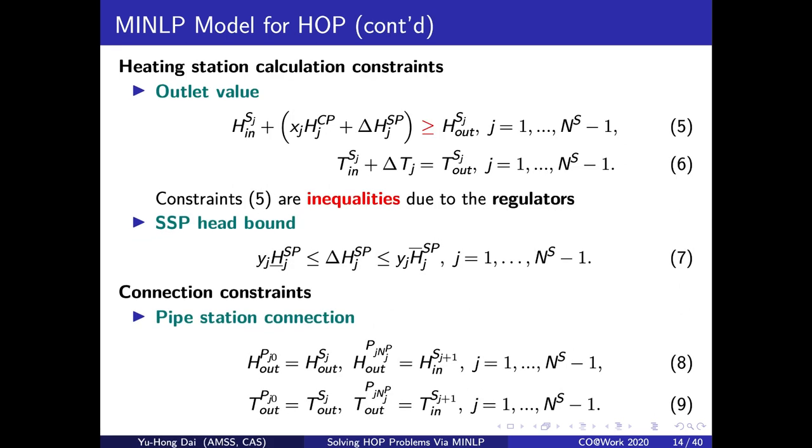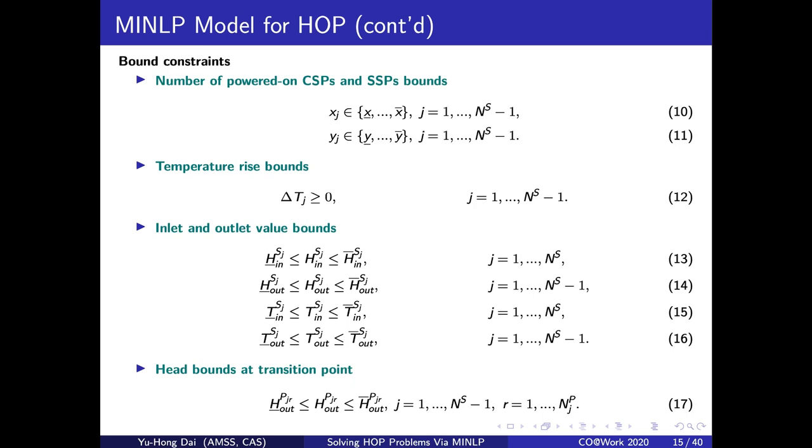Constraints 5 to 7 are for the calculation of heating station. The outlet head and temperature are decided by inlet values plus the head and temperature rise provided by pumps and heating furnaces. Note that constraints 5 are inequalities because the regulator in the station will restrict the head. The head of the shifted speed pump is lower and upper bounded when it is turned on, so we formulate it as constraint 7. We use constraints 8 and 9 to connect the values of stations and pipes. There are also some bound constraints for the number of power on pumps, the temperature rise, the inlet and outlet values in stations and pipes.